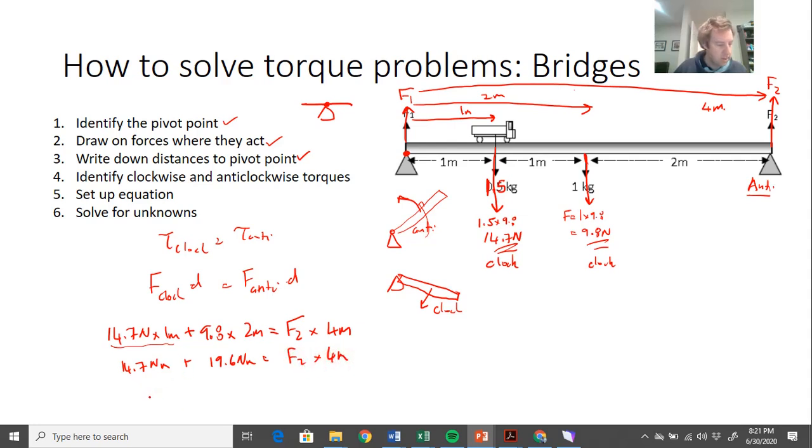I'm going to add these two together, so plus 19.6, I've got 34.3 newton meters, equals F2 times 4 meters. I'm going to divide both sides by 4 meters, and that gets me 8.625 newtons. And that's equal to my F2.